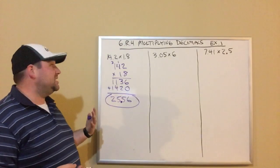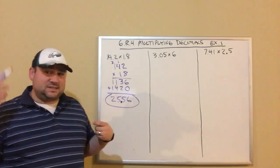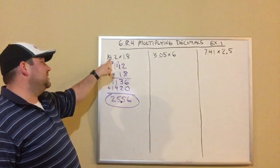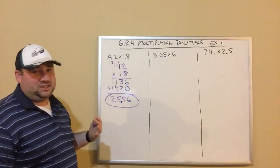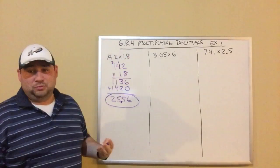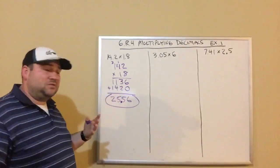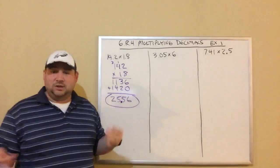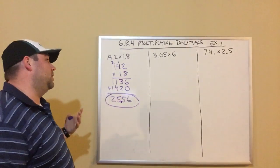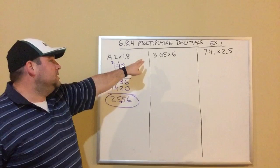Again, our common sense can come into play. If I look at this, 14.2 is about 14, 1.8 is about 2. 14 times 2 is 28, so I should get an answer somewhere in that range of 28. And 25.56, sure, a little less than 28, so it works.